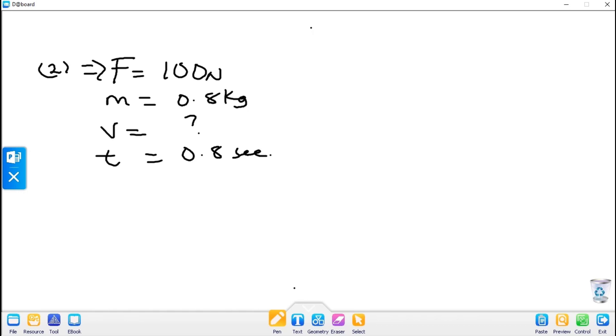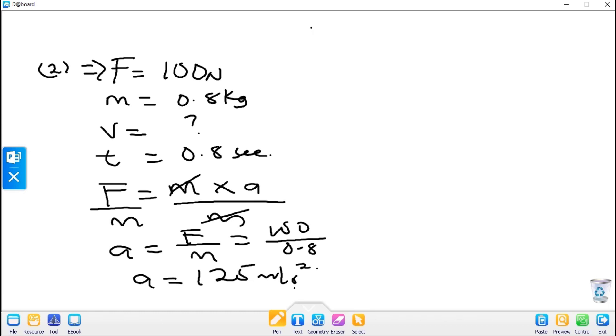This is very similar to what we've done before. Recall that F equals mass times acceleration. We can obtain acceleration from here. Dividing both sides by m, a equals F over m. Our F is 100 over 0.8, which gives us 125 meters per second squared. We've obtained the acceleration.